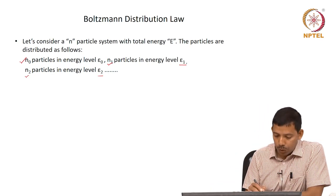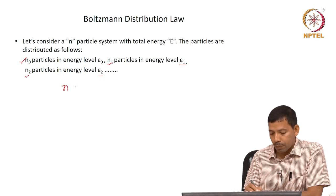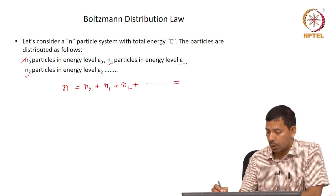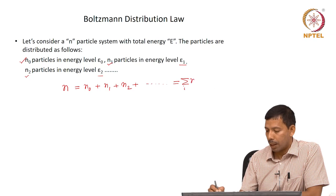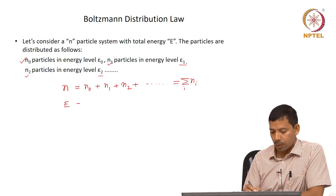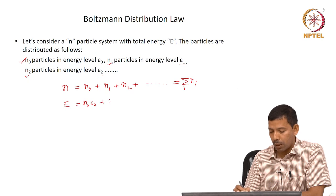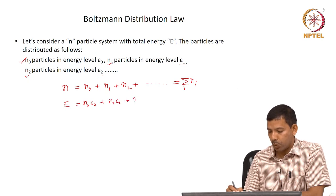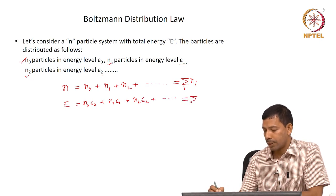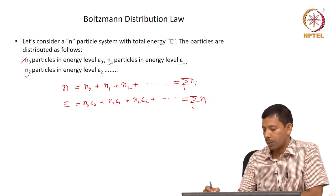The total number of particles N is the sum N₀ + N₁ + N₂ + ... which we write as the sum over i of Nᵢ. The total energy E is N₀ε₀ + N₁ε₁ + N₂ε₂ + ... which we write as the sum over i of Nᵢεᵢ.